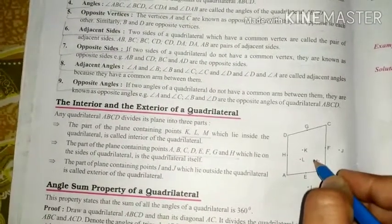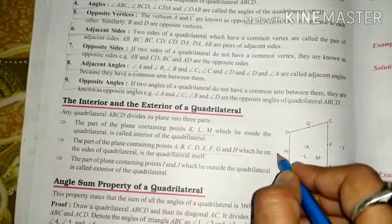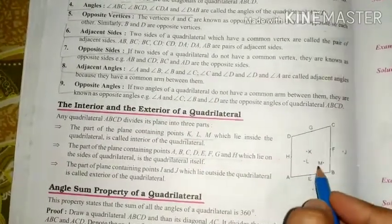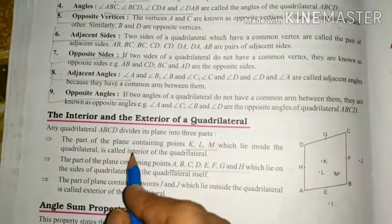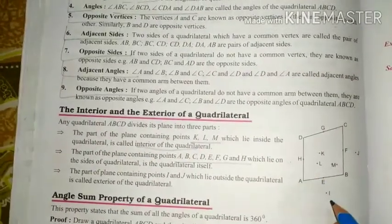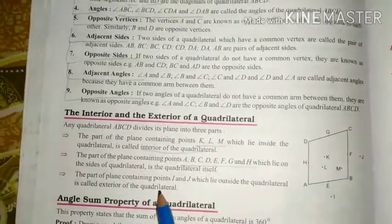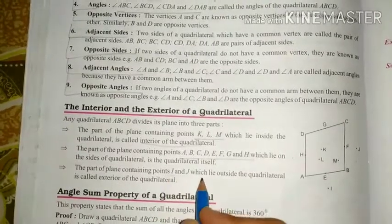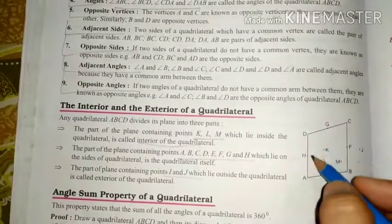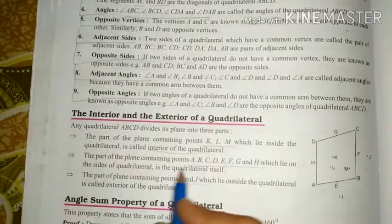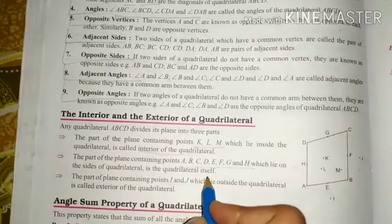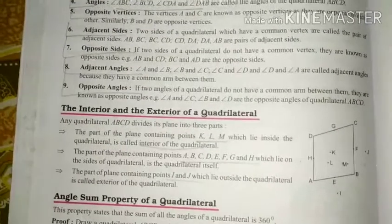Points outside the quadrilateral are called exterior points. Points K, L, M are interior points, and I is the exterior point. A, B, C, D, H, G, F make the quadrilateral boundary, and points on the figure are called boundary points.